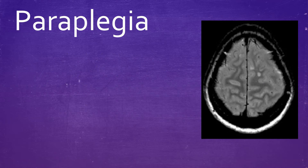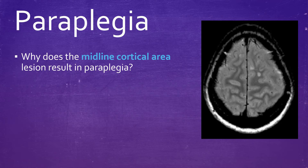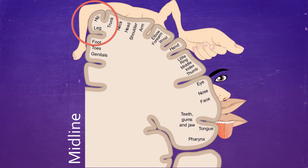Now the question to ask yourself is: why does a midline cortical area lesion result in paraplegia? To answer this, we have to look at the homunculus model, which gives us an approximate idea of what parts of the cortex control different parts of the body. As you can see here, towards the midline of the cortex, I've circled the area responsible for leg or hip involvement — that is towards the midline. So a lesion in this area can give us paraplegia.